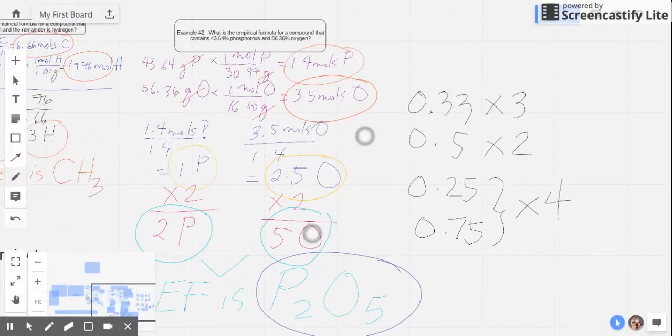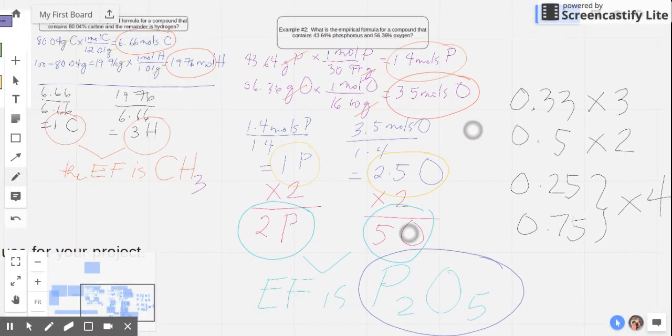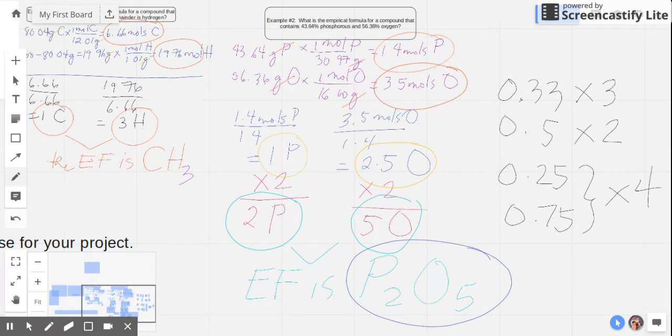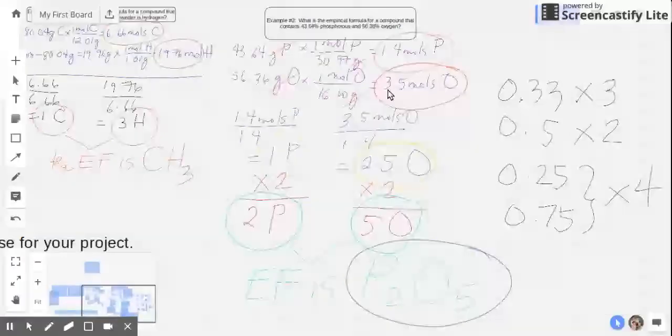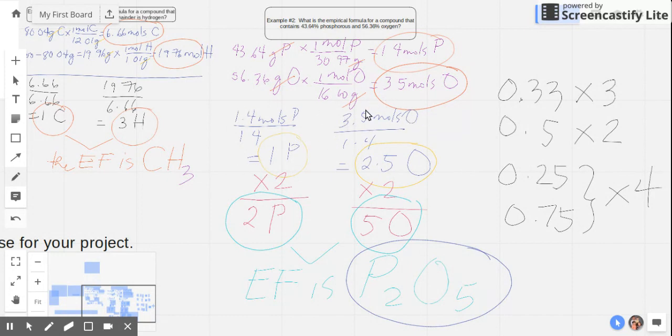So that's it. This is actually the overview of everything that deals with empirical formula. Take note of the steps. What we did is we divided the grams by its molar mass found in the periodic table. And then right after getting the moles, we need to divide it by the smaller value. And then you examine the quotient from that dividing the ratio.